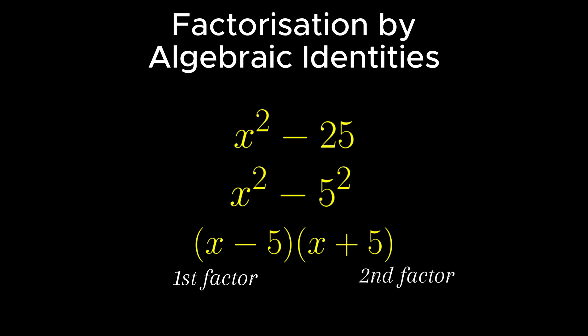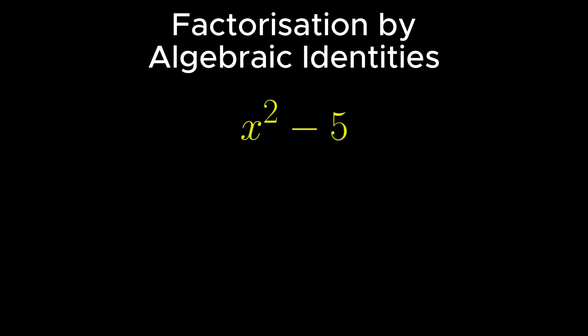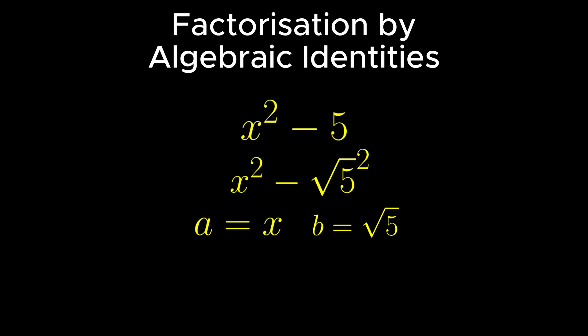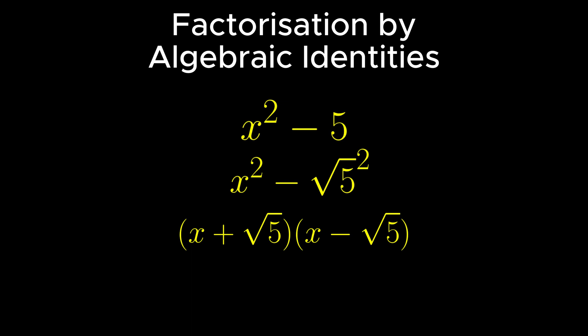In case the given term is not a perfect square number, it can still be expressed as a square by taking the root along with the square. Consider x squared minus 5 as an expression. As 5 is not a perfect square number, it can be expressed as x squared minus root 5 whole squared. Now comparing it with a squared minus b squared, we get a equals x and b equals root 5. Therefore, the given expression is factorized as x plus root 5 into x minus root 5.